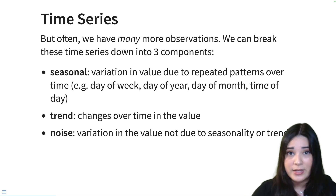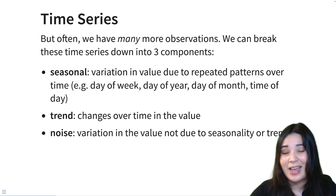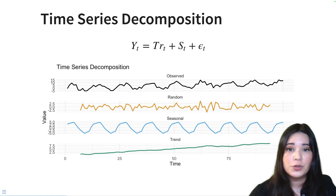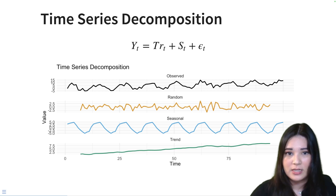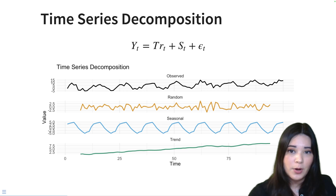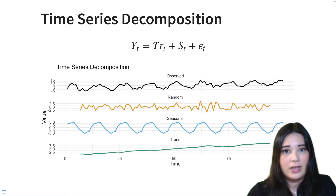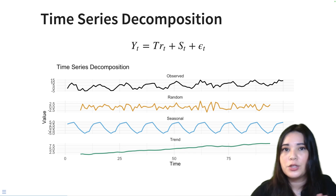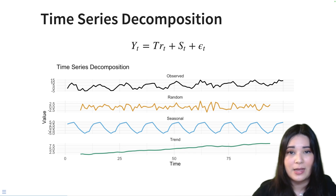And then lastly, we have a noise component — just random variations in your measurement that we're assuming we cannot predict. Anytime that we have a time series, we might want to first try and decompose it into these three components. What we're assuming here in the case of an additive time series is that our values are some sum of a trend component, a seasonal component, and some random variation or noise. In R, it's super easy to decompose a time series and make a plot looking at these three components.